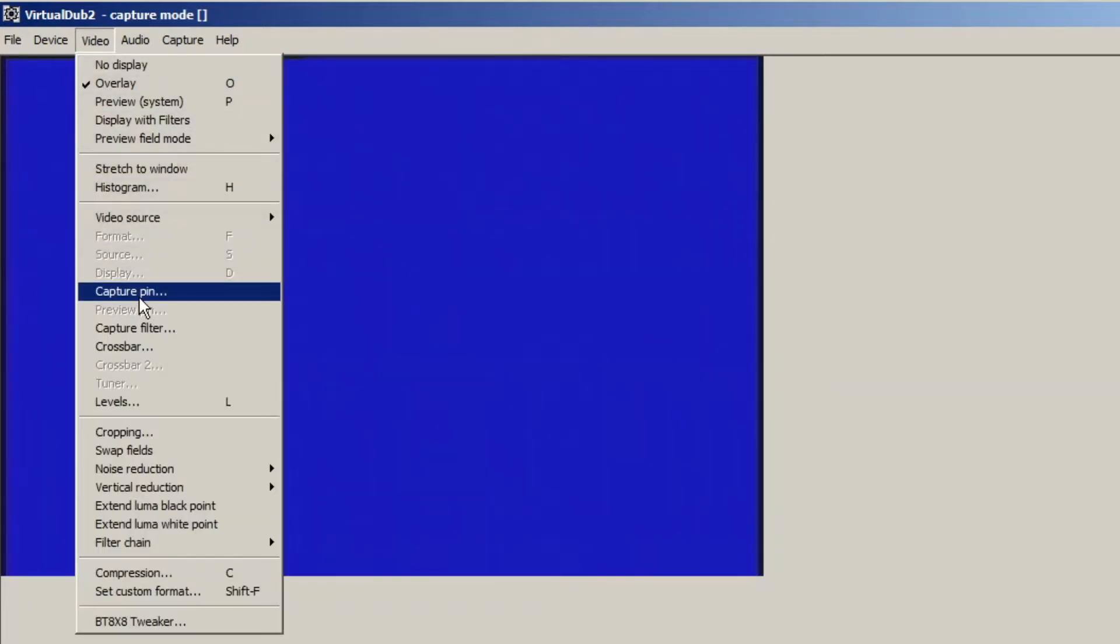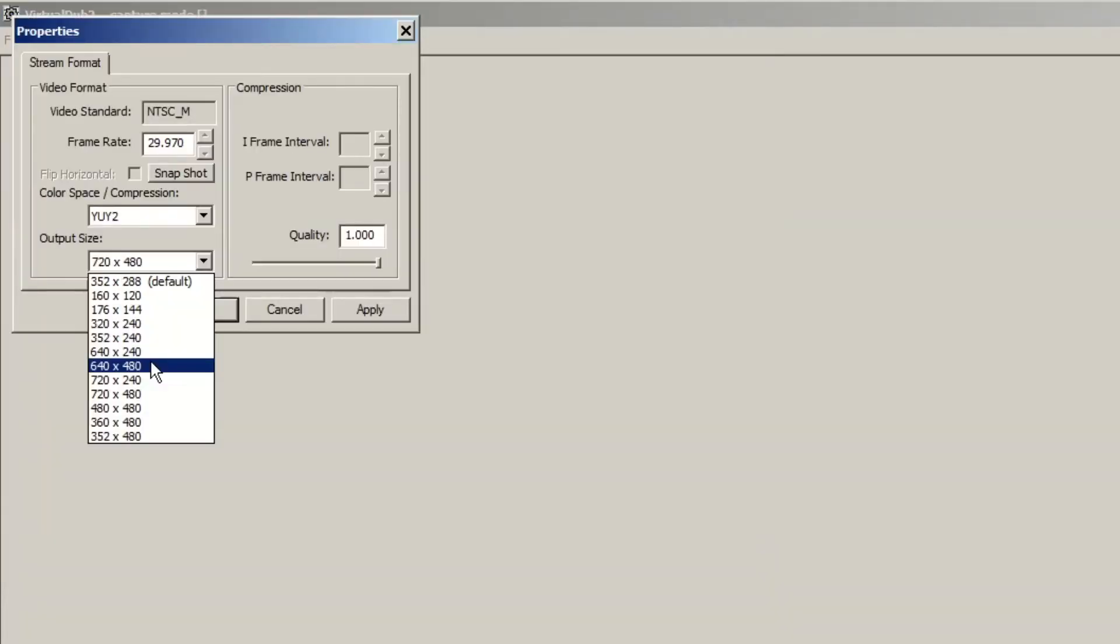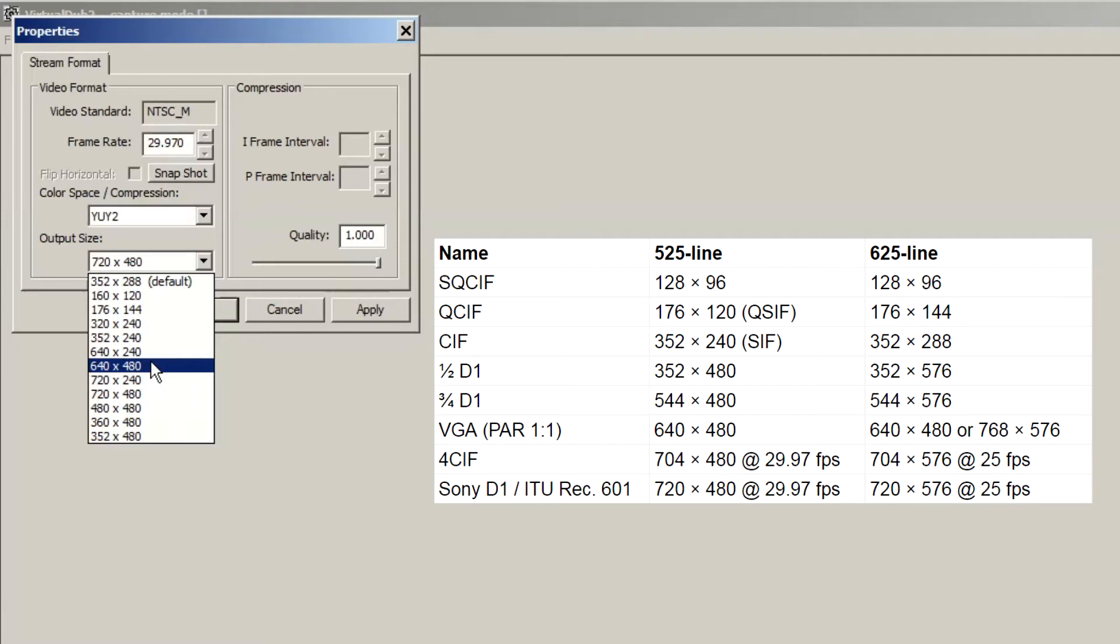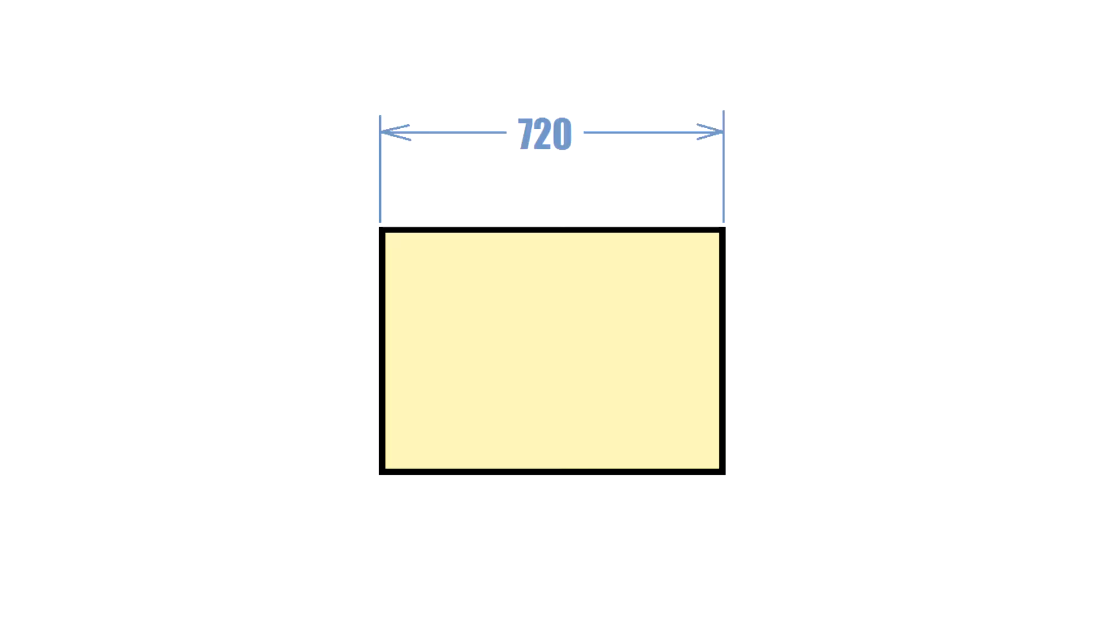When you are digitizing analog video, which frame size should you choose? All formats, starting with half D1, provide enough pixels to capture anything from VHS to broadcast-quality television, but if you want to stay close to the standards recommended by the International Telecommunication Union, choose the ones that have 704 or 720 pixels per line.